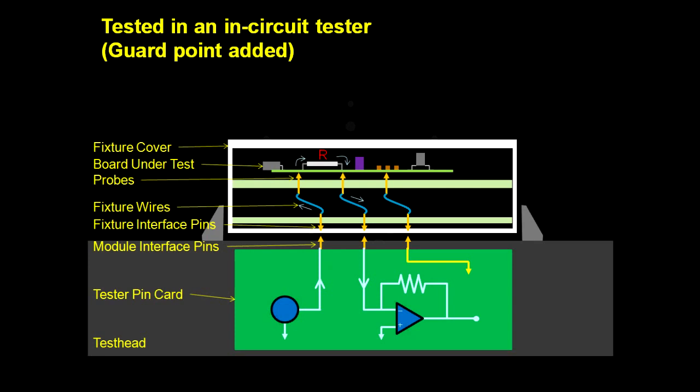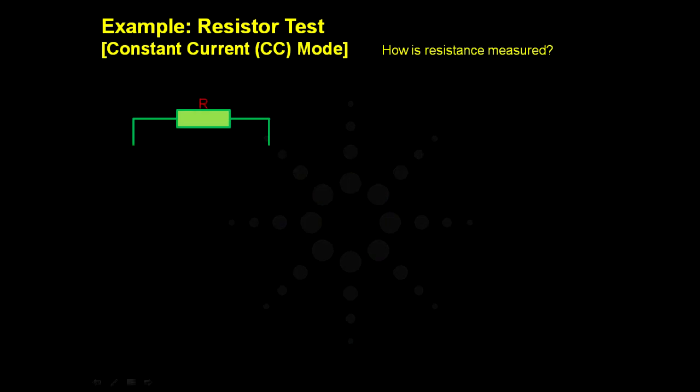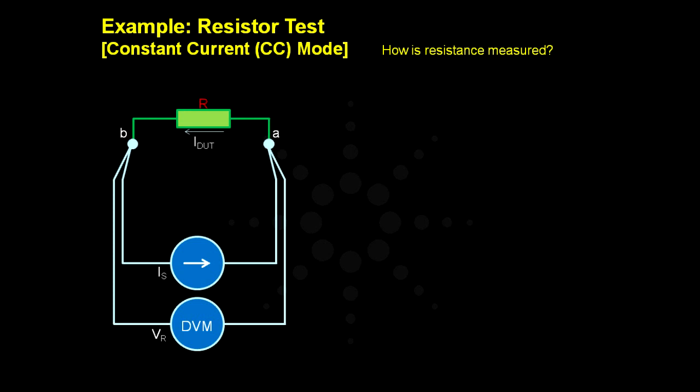With some testers like Agilent i1000D, a constant current source can be used instead of the constant voltage source for the resistance test. This time, the resistor is connected across the constant current source at point A and B. The current IDUT flowing through the resistor creates a potential difference VR measured by the voltmeter.